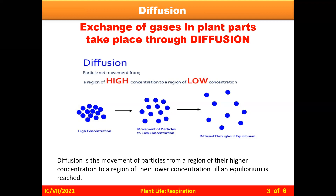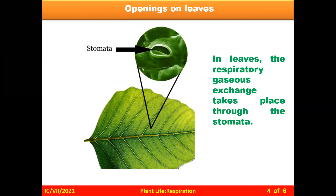Diffusion is the movement of particles from the region of their higher concentration to the region of their lower concentration till an equilibrium is reached. Now, looking at the lower surface of the leaf, you will see a minute pore called stomata. In leaves, the respiratory gaseous exchange takes place through these stomata.